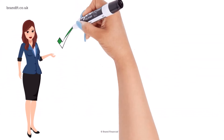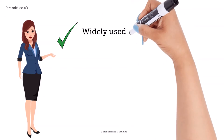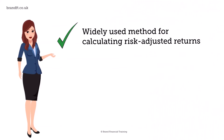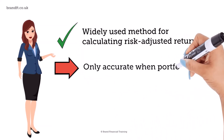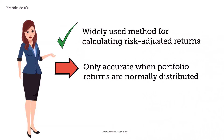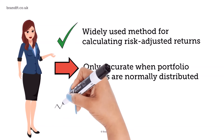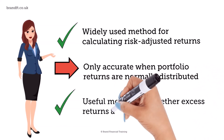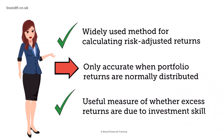The Sharpe Ratio is a widely used method for calculating risk-adjusted returns. However, a limitation to be aware of is that as it uses the standard deviation of returns, it is only an accurate measure of performance when a portfolio's returns are normally distributed. Having said that, it is a useful measure of whether a portfolio's extra returns are due to investment skill or as a result of taking too much risk.